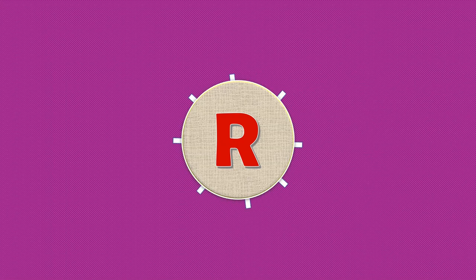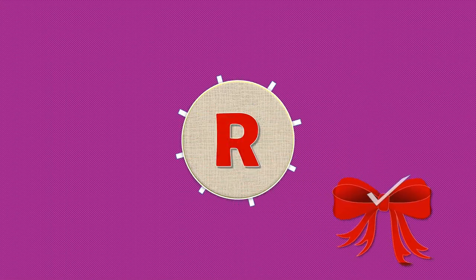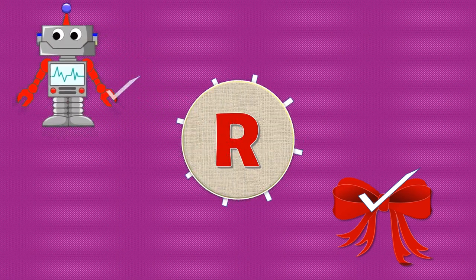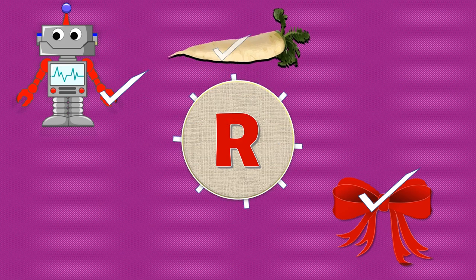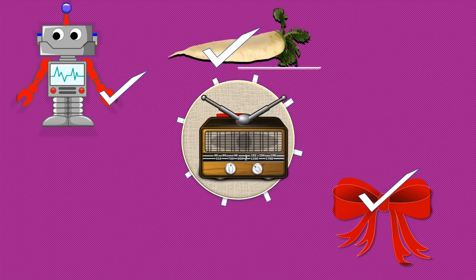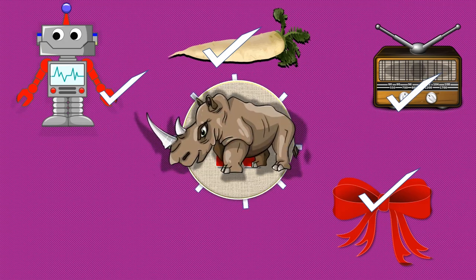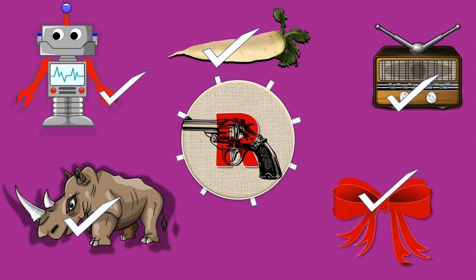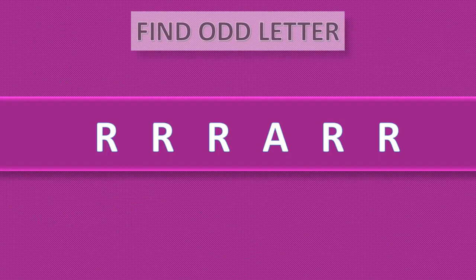R. R for ribbon, correct, yes. R for robot, correct, yes. R for radish, correct, yes. R for radio, correct, yes. R for rhinoceros, correct, yes. R for gun — no, it's wrong. Find odd letter.